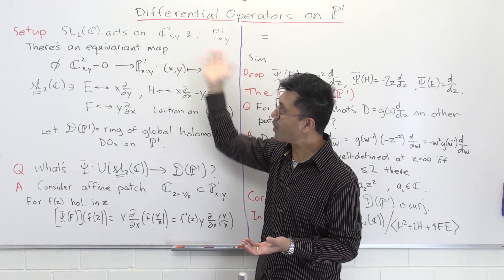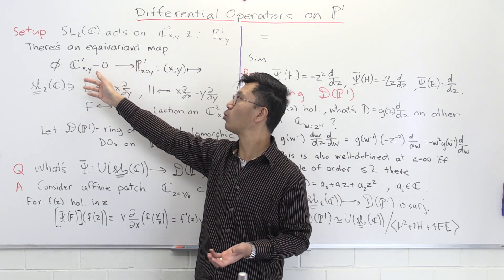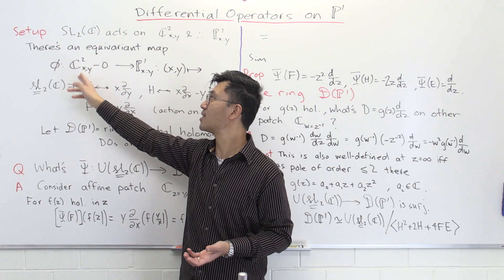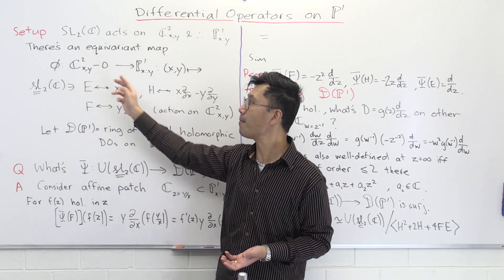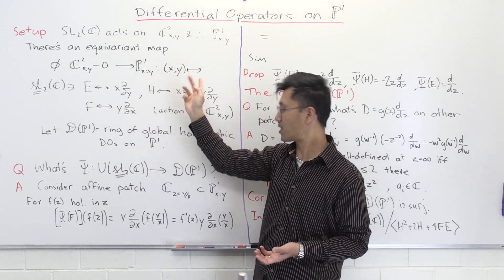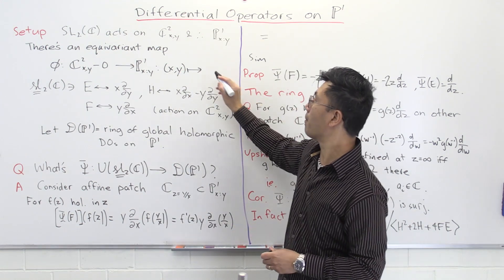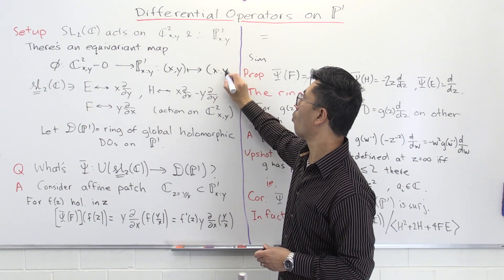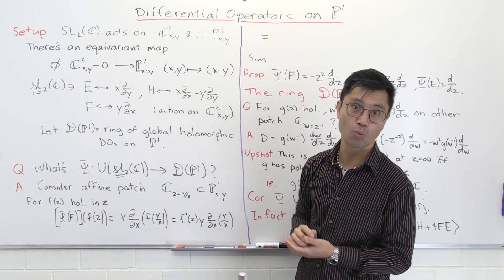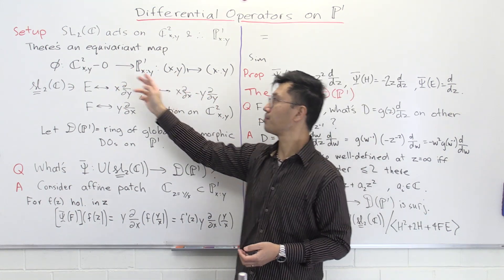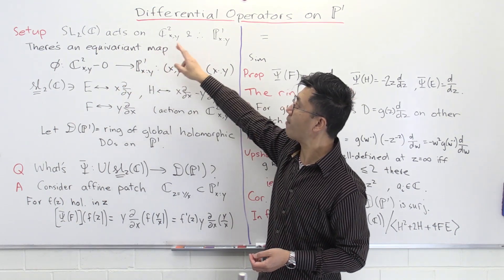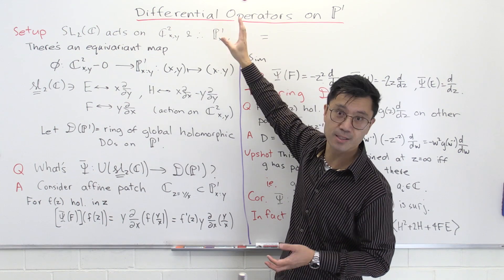Perhaps a better way to see that is through an equivariant map. How do we construct P1? We take a quotient of C2 minus the origin. We have a quotient map phi that sends (x, y) to the ratio x to y — the projective point with homogeneous coordinates x and y. This is an equivariant map, and so SL2C also acts on P1 in the natural way.